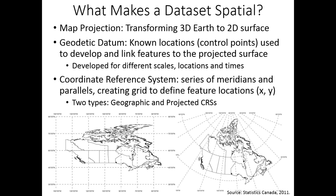The figure shows that the appearance of features can change significantly depending on the applied projection, datum, and coordinate reference system. When using multiple layers in GIS, it is best practice to ensure that these properties are uniform. This is particularly important for analysis using multiple layers, where differing properties can result in erroneous measures, overlays, or processing tools failing.